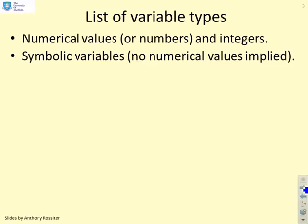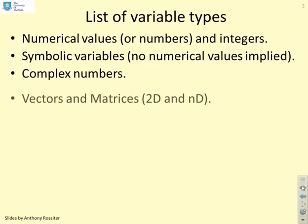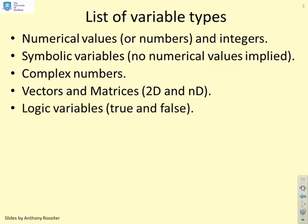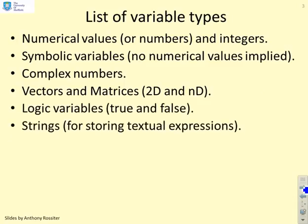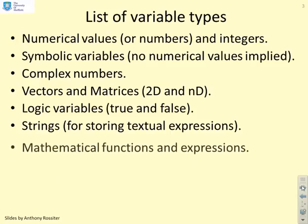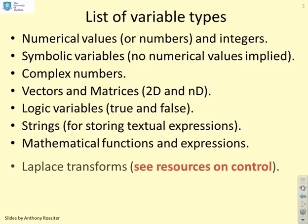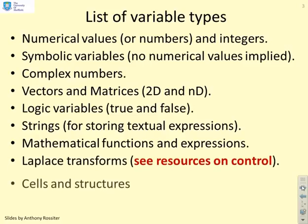Here's a quick list of the variable types you'll come across: numerical values or numbers and integers, symbolic variables which support algebra — things like x, y, z — complex numbers, vectors and matrices, logical variables to support decision making, strings for storing textual expressions or sentences, mathematical functions and expressions such as f of x, Laplace transforms, cells and structures, and so on.